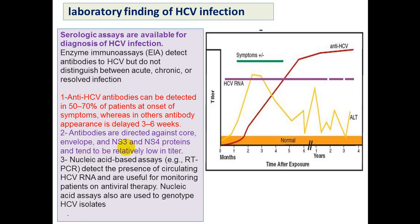Molecular techniques based on nucleic acid, such as reverse transcriptase real-time PCR, detect circulating hepatitis C virus RNA and are useful for monitoring patients on antiviral therapy — this is called viral load testing — meaning estimation of the HCV genome in the serum of patients undergoing antiviral therapy.